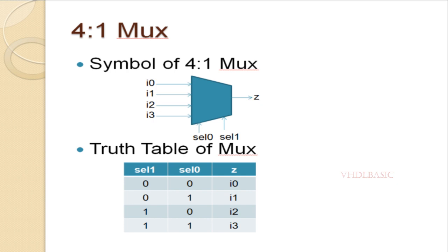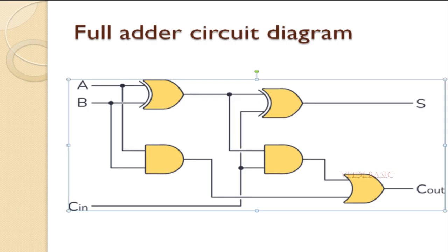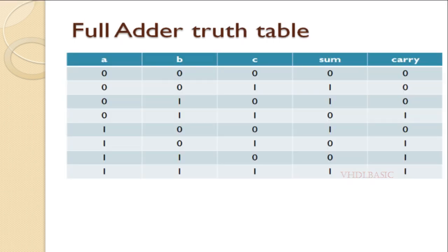This is the circuit diagram of the full adder. Here a, b, c are the inputs. Sum and carry out are the outputs. This is the circuit we are going to implement using a 4-to-1 mux. This is the truth table of the full adder — a, b, c are inputs to the full adder, and sum and carry are outputs.